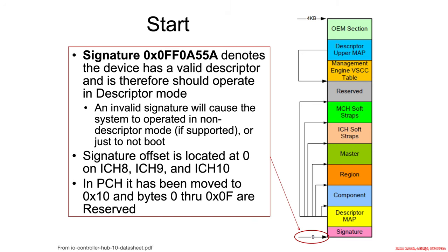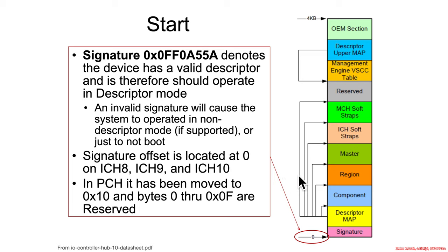As briefly mentioned before when showing a picture of four chunks of memory all displaying the same information, at the base of the data structure is a signature. It's not a digital signature in the security sense — it's just a byte signature. The hardware reads the base, checks if it matches an expected value, and if so, it treats this as running in descriptor mode and parses all the relevant data. If that signature is invalid, it falls back to non-descriptor mode on hardware that supports it, otherwise it simply won't work.